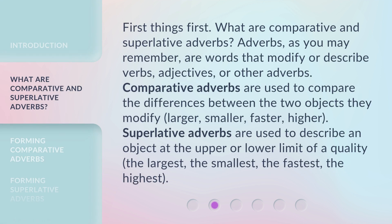First things first, what are comparative and superlative adverbs? Adverbs, as you may remember, are words that modify or describe verbs, adjectives, or other adverbs. Comparative adverbs are used to compare the differences between the two objects they modify — larger, smaller, faster, higher. Superlative adverbs are used to describe an object at the upper or lower limit of a quality — the largest, the smallest, the fastest, the highest.